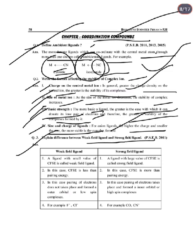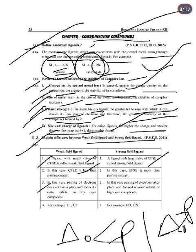Next: Difference between weak field and strong field ligands. A weak field ligand has a small value of crystal field splitting energy (CFSE, Δ₀). A strong field ligand has a large value of CFSE. In weak field ligands, Δ₀ is less than the pairing energy, so electrons don't pair up and the complex forms outer orbital or high-spin complexes. In strong field ligands, Δ₀ is greater than pairing energy, forming inner orbital or low-spin complexes.